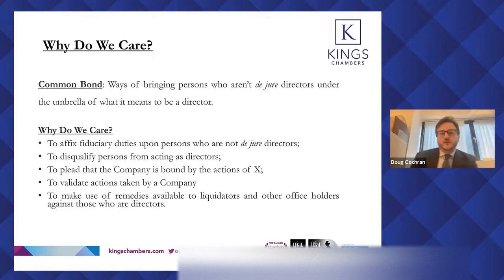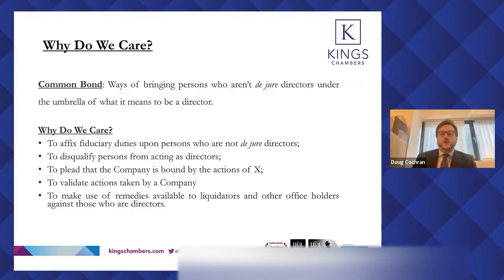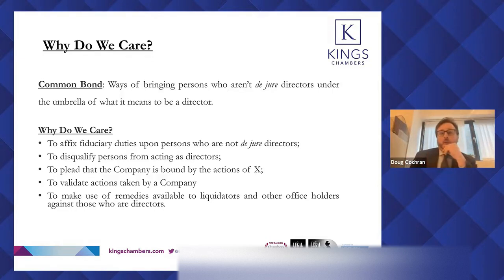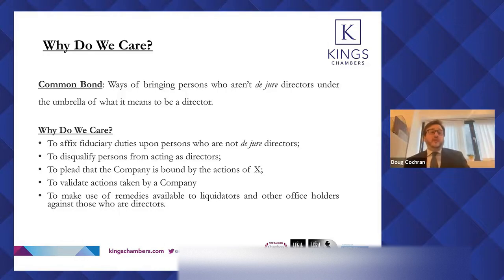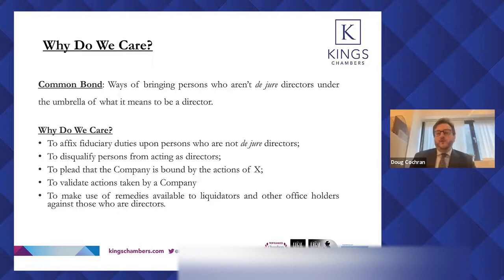Their misfeasance means the Secretary of State wants to prevent them from acting as a director, but needs to prove first that they were a director in the first place. If they're not a de jure director, there has to be some other way the Secretary of State can take that action. Another context is validating the actions of a company — saying that an action was performed in fact by a director and as a result the company is bound by it, even if the company doesn't want to be. Identifying who is and who isn't a director is of very great importance in the context of insolvency.